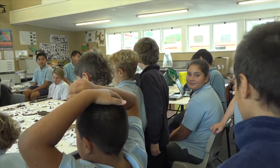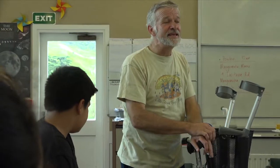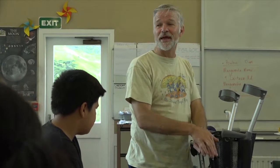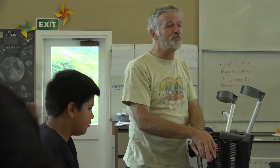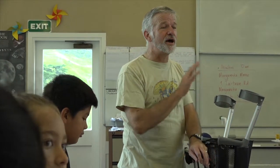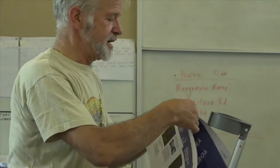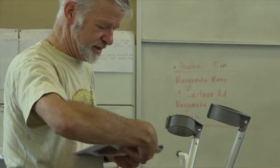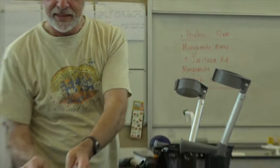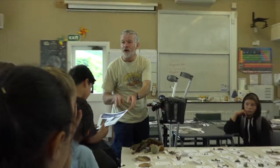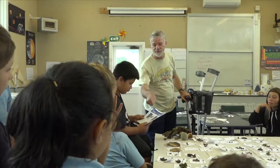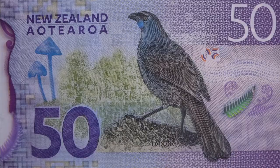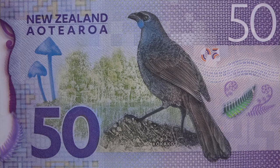Has anyone seen a $50 banknote? The New Zealand $50 banknote has a mushroom on it, and it's the only banknote in the world with a mushroom on it. I can pass this around and you can see. Why was the mushroom put on the $50 banknote? It was there because of a Māori story — the Māori story was from Tūhoe iwi.